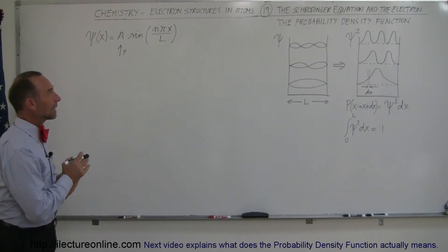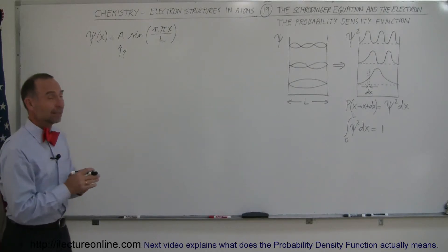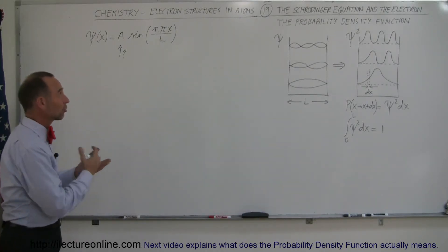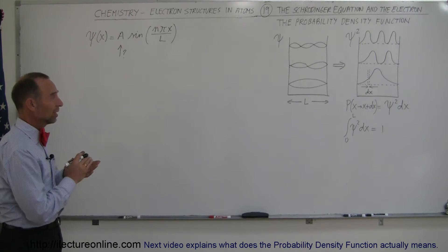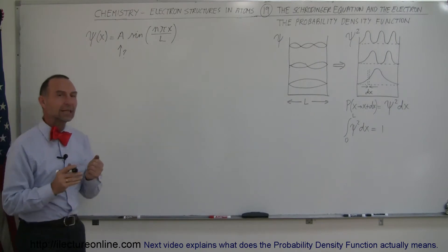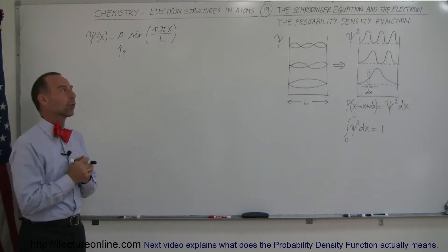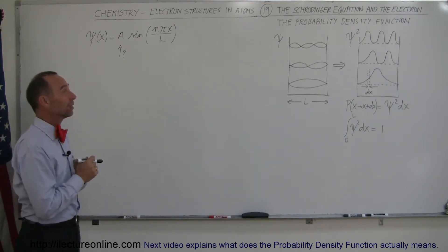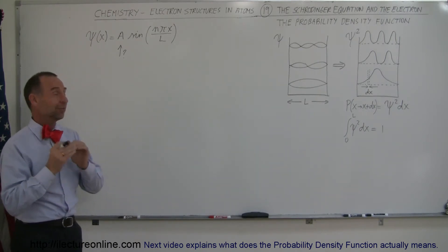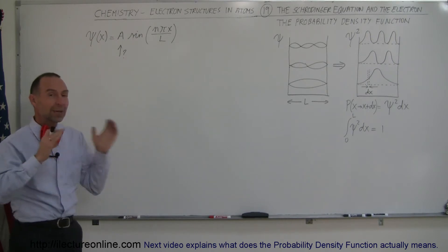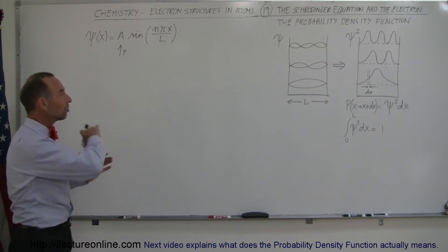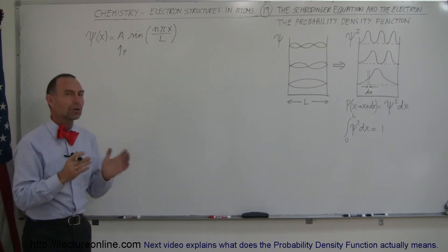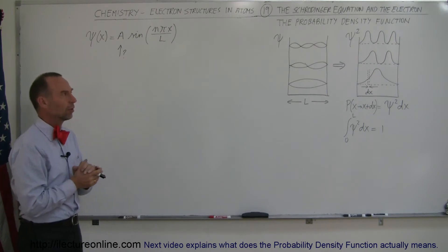The next topic we're going to look at in our quest to understand the electron structure in atoms is the Schrödinger equation. He was a very famous, very smart scientist who came up with the equation describing wave motion in all kinds of respects.